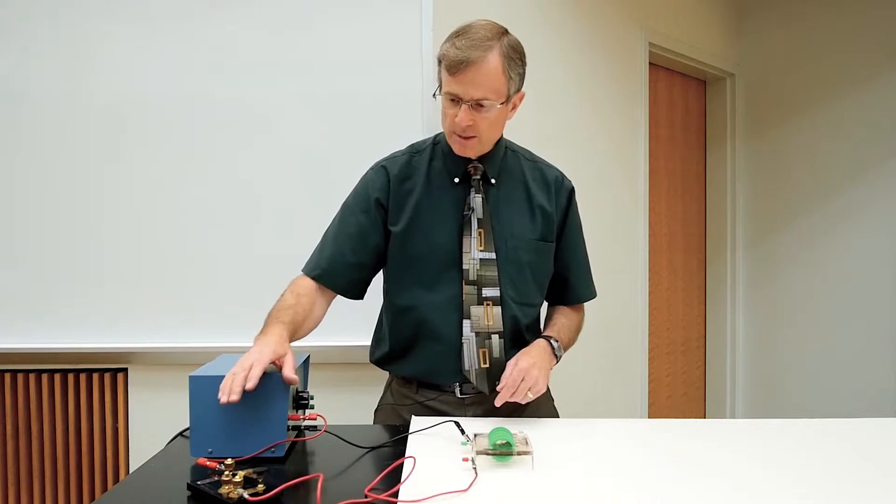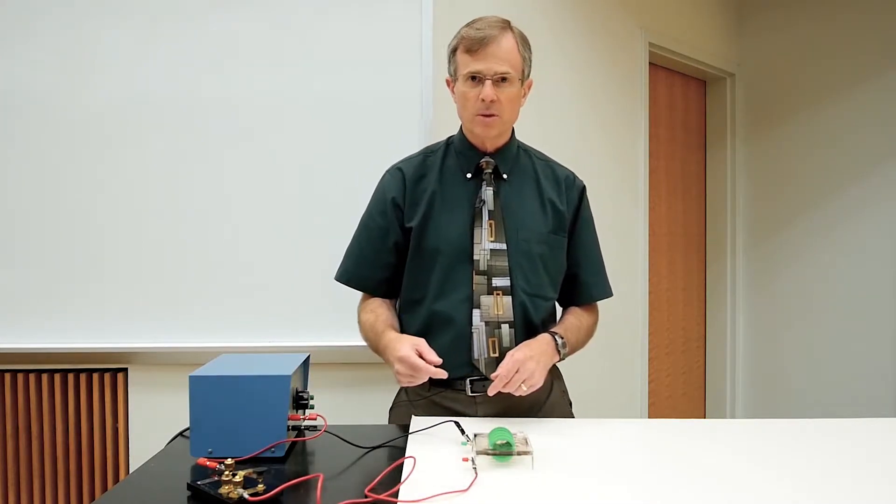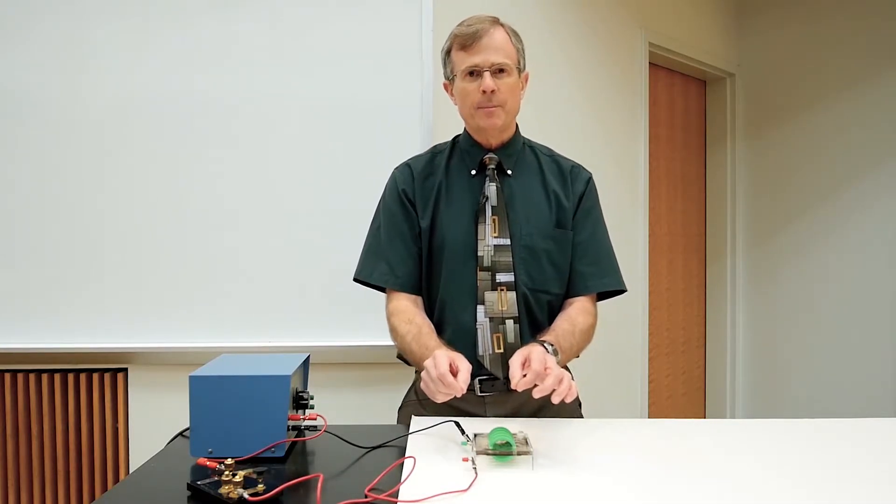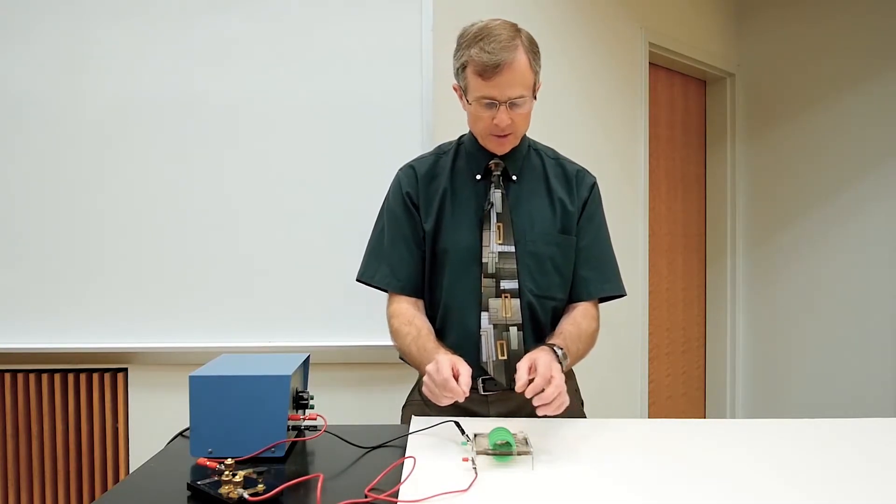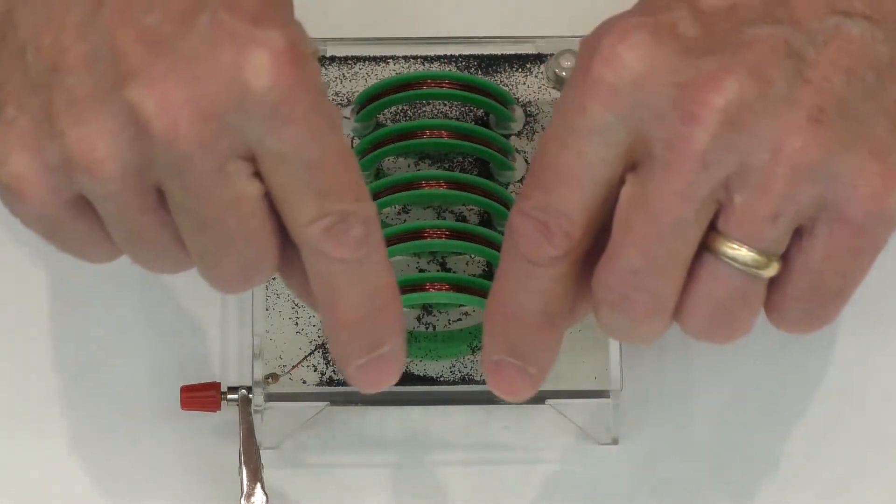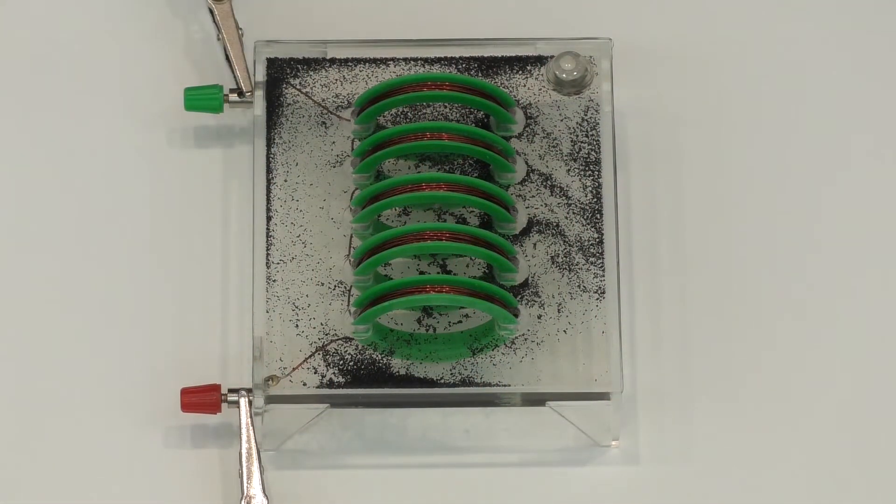That when I energize by pushing this button, when I put a current through this coil, then these iron filings will line up in the direction of the magnetic fields. So what we'll be looking for is iron filings line up like this, and come around, and then back, and back in again.